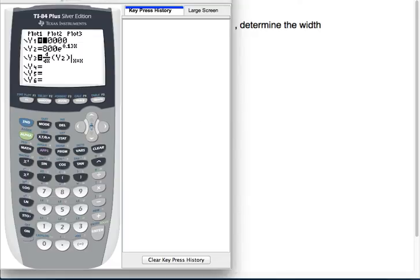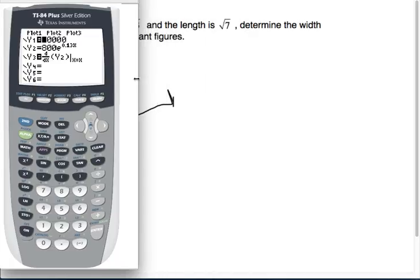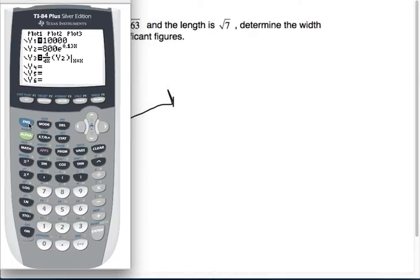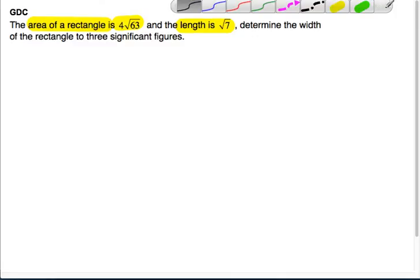And this problem is a word problem where we are asked to, we're given some figures with a rectangle. And the area of the rectangle is 4 root 63. The length of the rectangle is root 7. We're going to be asked to determine the width to 3 significant figures. So that's another clue that we need the calculator.